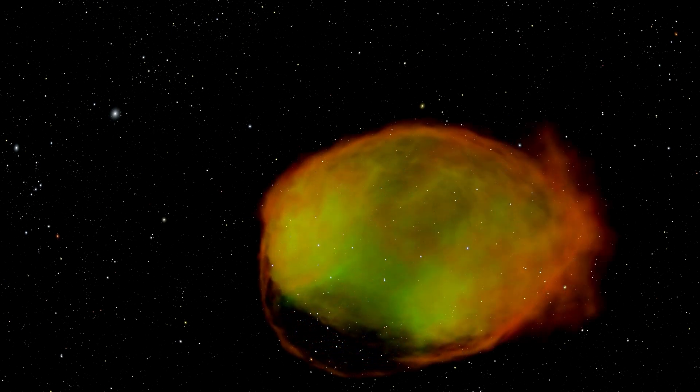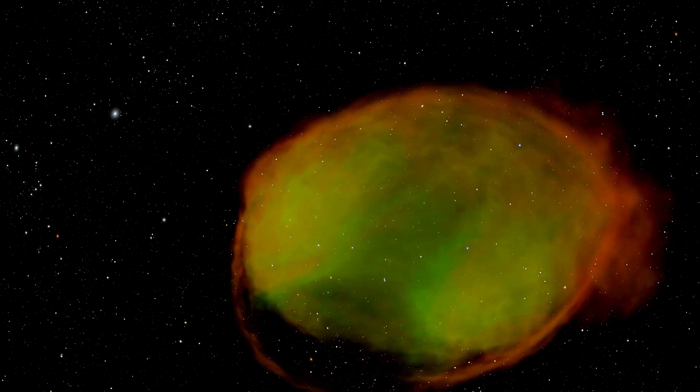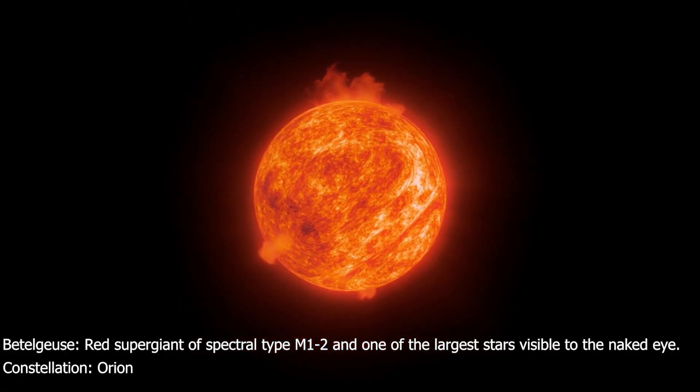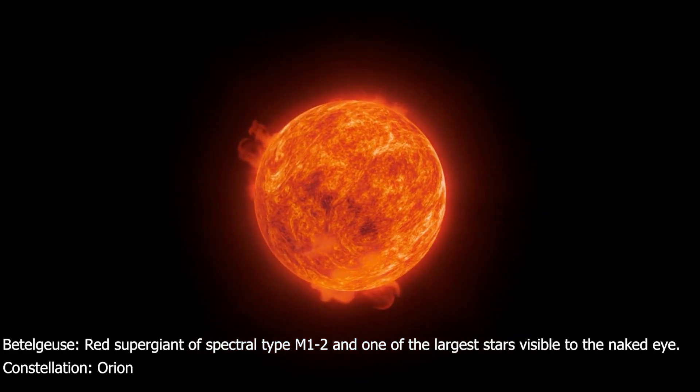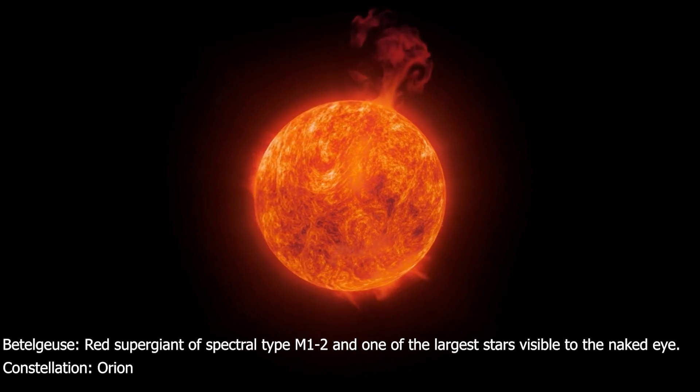We've always known it was inevitable, but the timing wasn't known. Betelgeuse, a brilliant red star in Orion, is the most well-known example of a red supergiant, roughly 550 light-years distant.